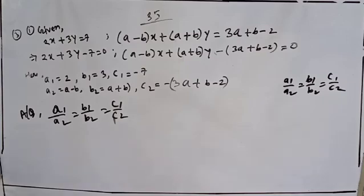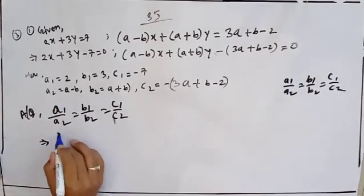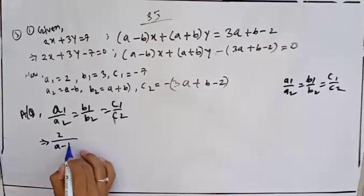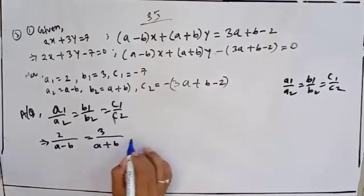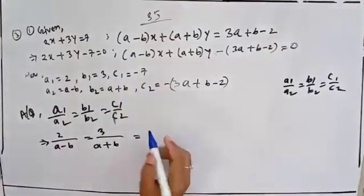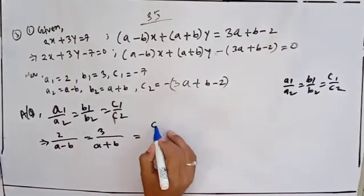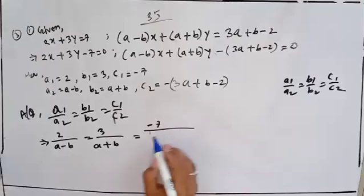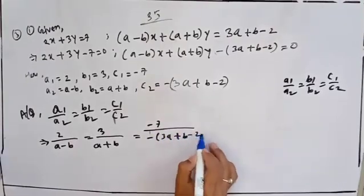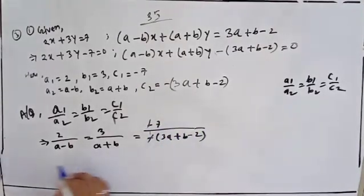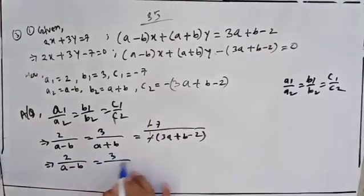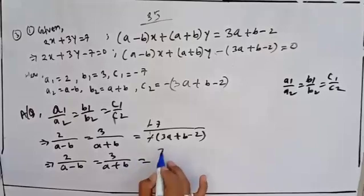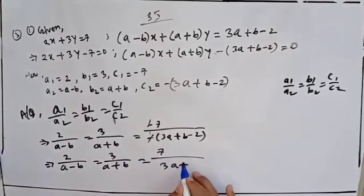So A1 is 2, A2 is a minus b, B1 is 3, B2 is a plus b, C1 is minus 7, and C2 is minus 3a plus b minus 2. So minus minus cancel, so 2 by (a minus b) equal to 3 by (a plus b) equal to 7 by (3a plus b minus 2).